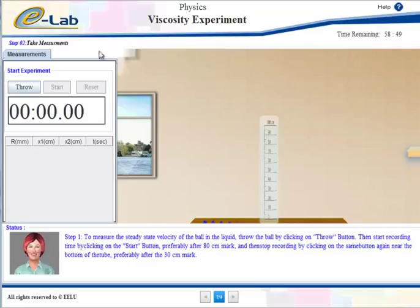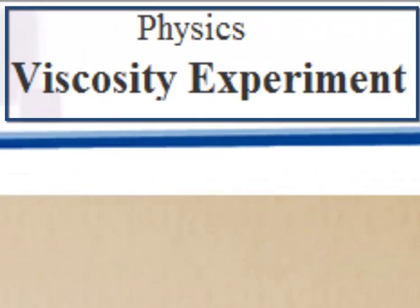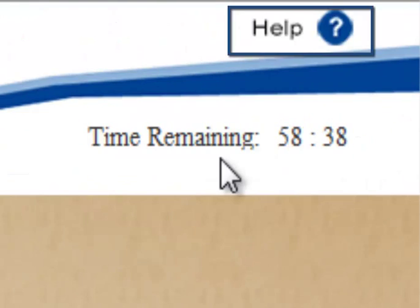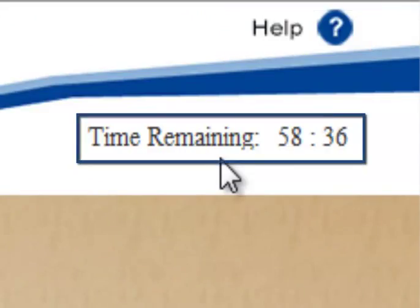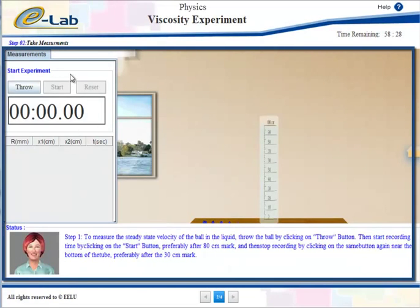Now let's know more about the interface. This interface is divided into three parts. The header includes the project logo, experiment title, help button, and timer for the whole experiment. You are supposed to finish the experiment and export results before the end of time. The main part of the experiment is divided into another three parts.